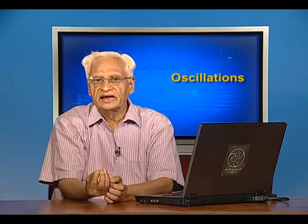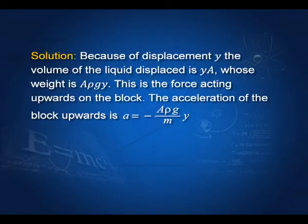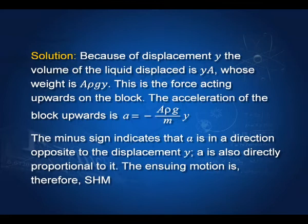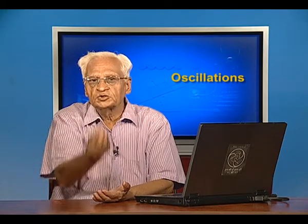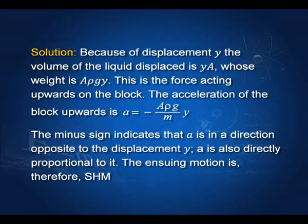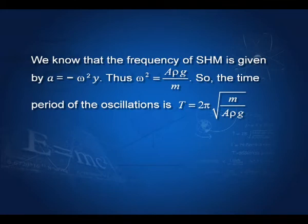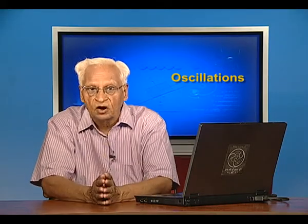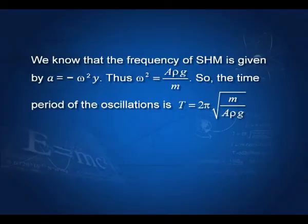The weight of this additional displaced liquid is A·y·ρ·g, where ρ is density and g is the acceleration due to gravity. This weight is the restoring force pushing the system upwards. The acceleration is this force divided by m, giving a = −(Aρg/m)·y. The minus sign is because displacement was downwards while the restoring acceleration is upwards. This is of the form a = −ω²·y, confirming simple harmonic motion. Therefore ω² = Aρg/m and the time period is T = 2π√(m/Aρg).